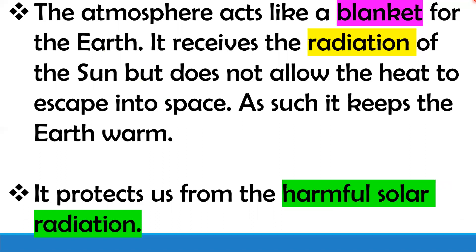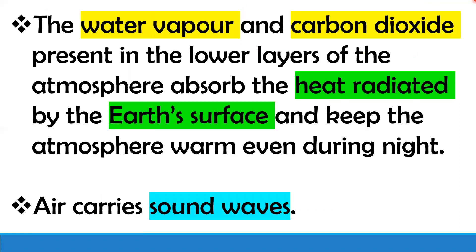The atmosphere is like a blanket — it receives the heat energy of the sun but does not allow the heat to escape, and so keeps the earth warm. It also protects us from harmful solar radiation. The water vapor and carbon dioxide present in the lower layers of the atmosphere absorb the heat radiated by the earth's surface and keep the atmosphere warm even during the night.